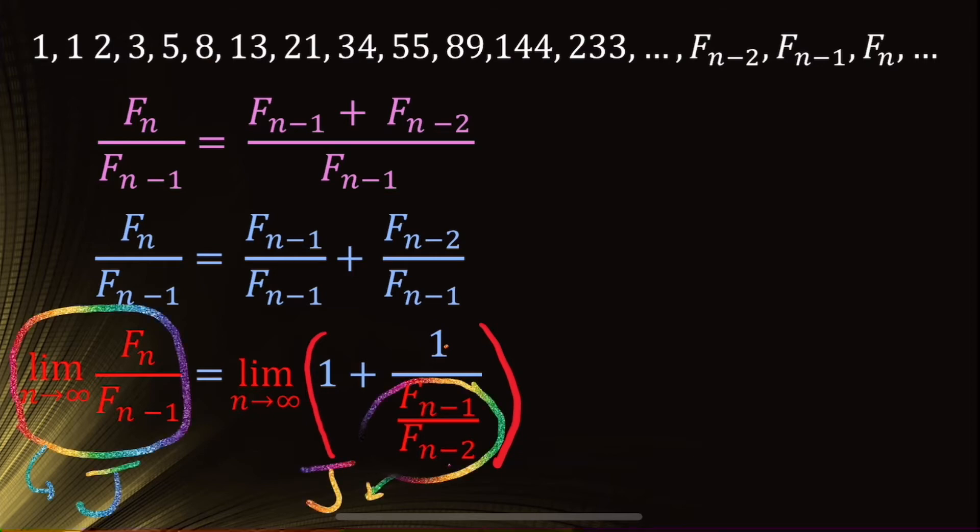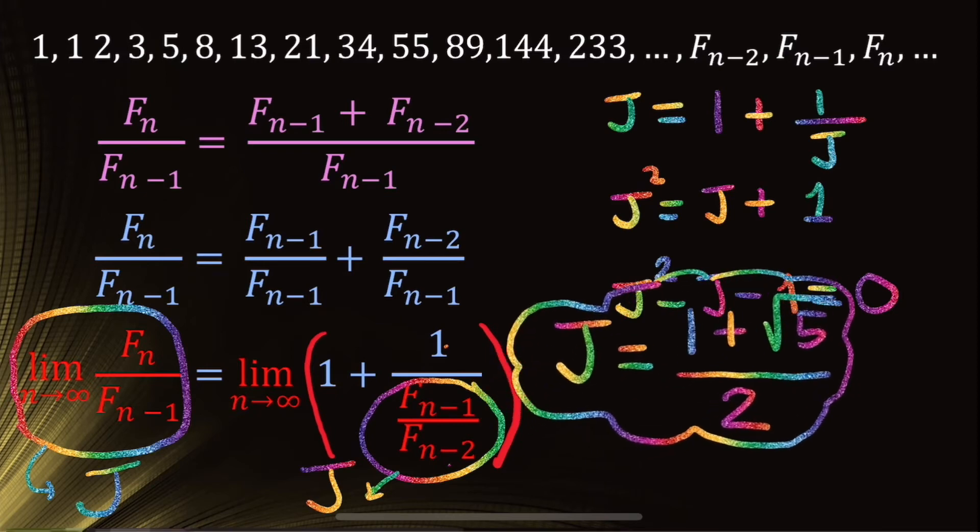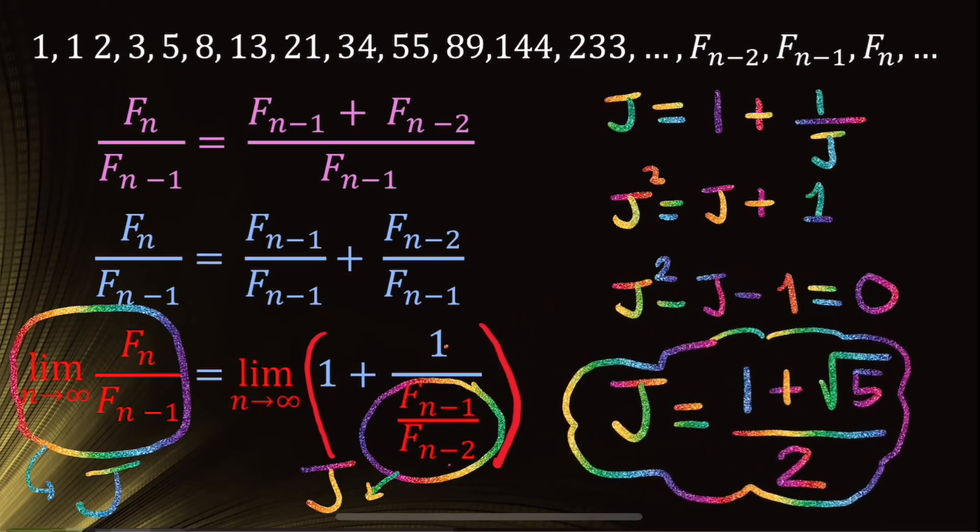And that means to clean up this equation, we can just rewrite those fractions as something else. We'll just call it j for Jessica. And so we can rewrite it like this, multiply both sides by j, move everything over, and there is that equation again. And we know what the solution is. It's the golden ratio, 1 plus the square root of 5 over 2.